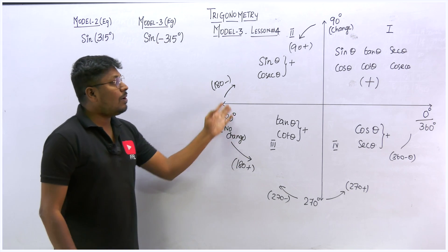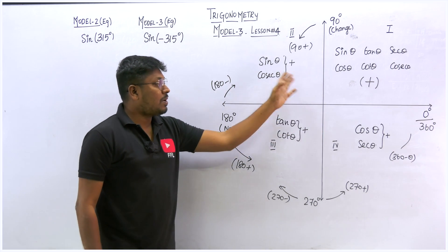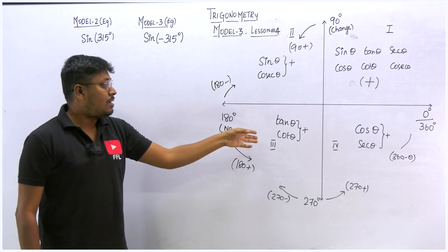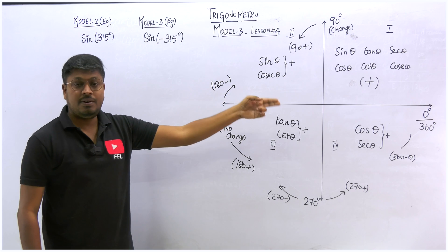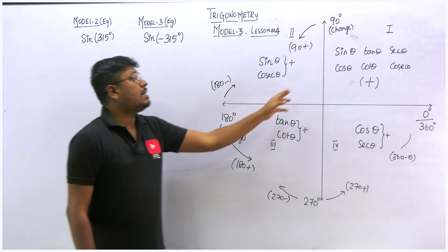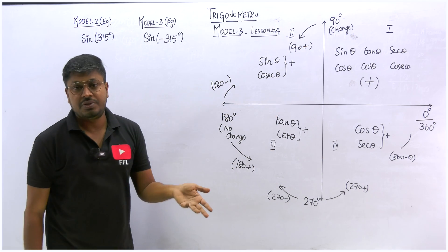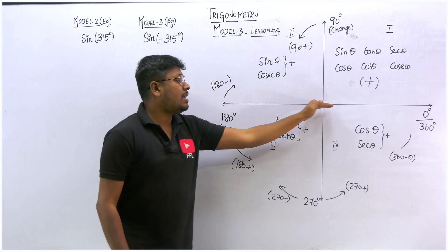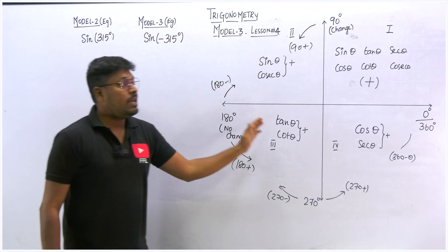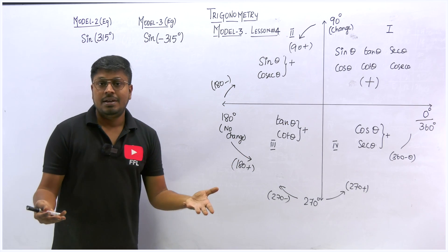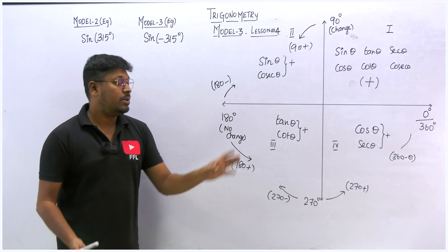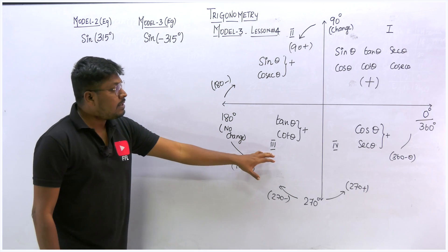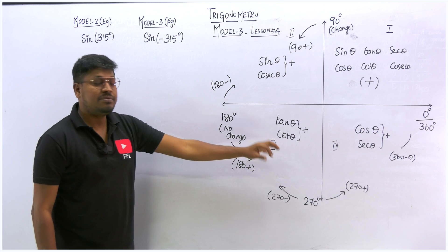In the previous lesson we learned which quadrant is positive and which is negative, and the rule that if the angle is 180°, 360°, or 0° you should not make any change to the trig ratio, but if it is 90° or 270° you should change it. Some students remember it as: horizontal line — no change; vertical line — change. Either way, do not make any mistake on this chart.